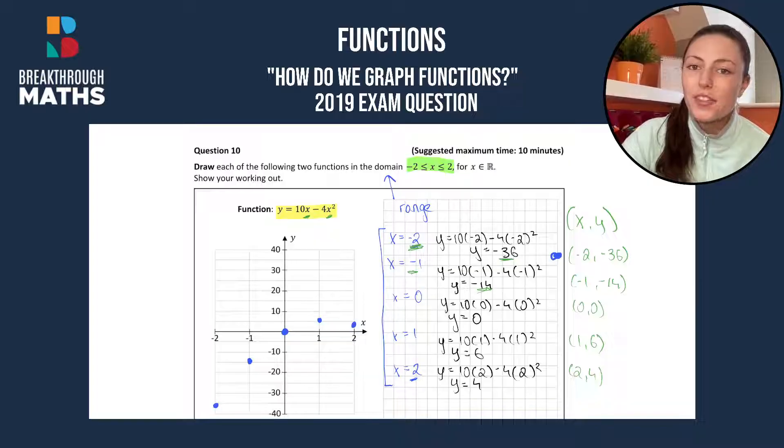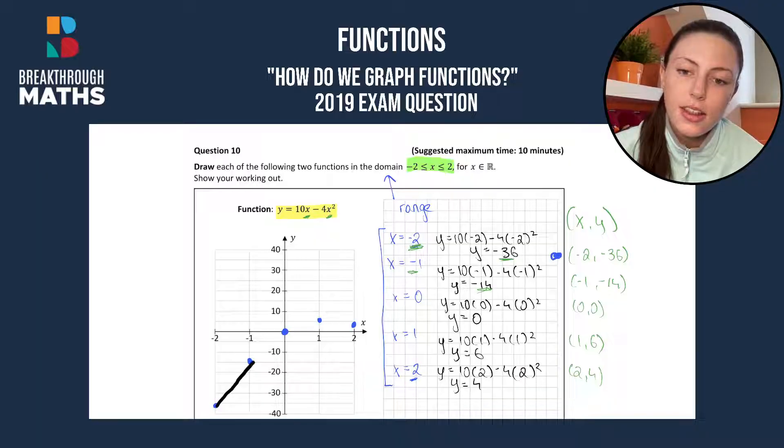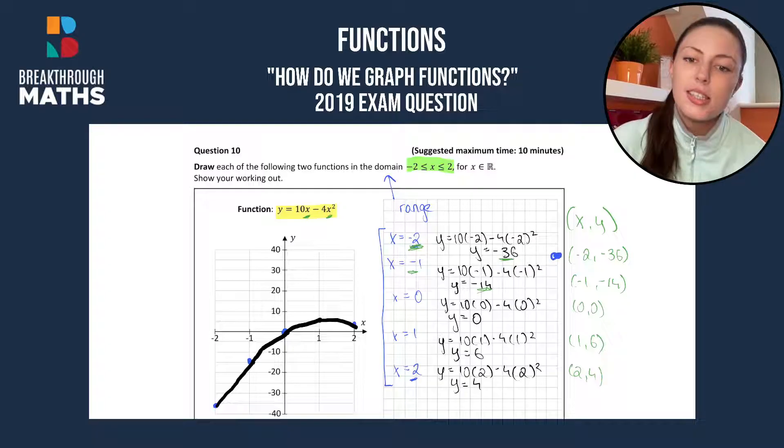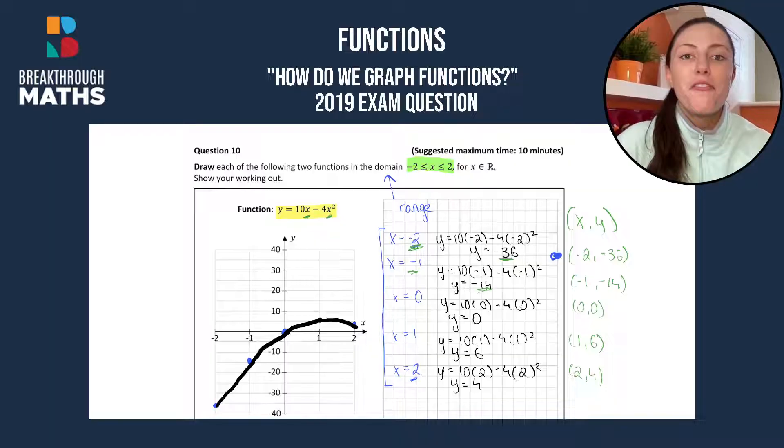Now all we have to do is join up those points. We very carefully join each of the points together. And we go up to the next point and up to the next. And now we have to go downwards. You can see our graph is upward sloping and then it starts to curve downwards. And that's how you draw a function.